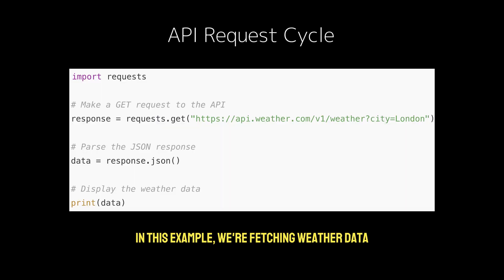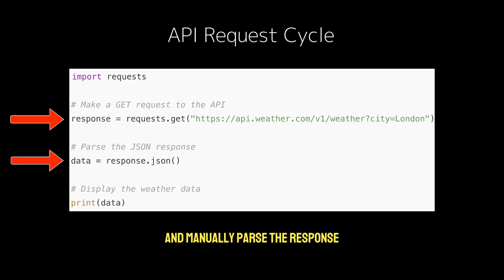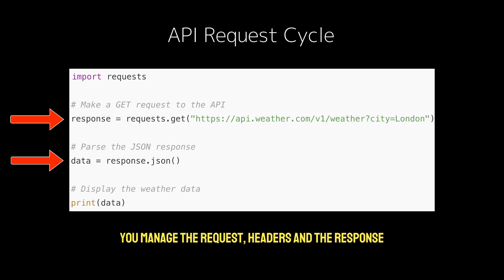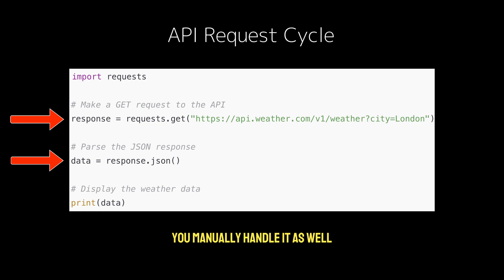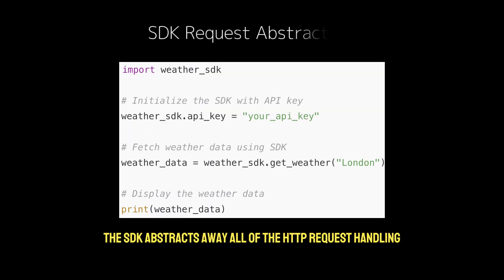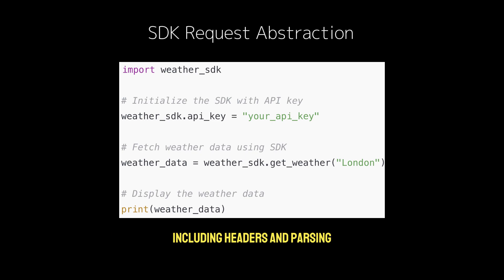In this example, we're fetching weather data. You'll make a GET request, handle authentication if required, and manually parse the response. As you can see, with an API you manage the request, headers, and the response parsing yourself, and if authentication is needed, you manually handle it as well. With the SDK, it abstracts away all of the HTTP request handling, including headers and parsing. You just call the provided method — get weather — and it handles everything for you.